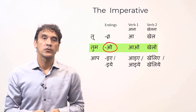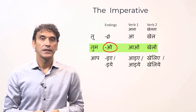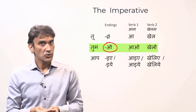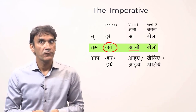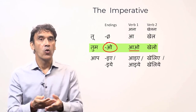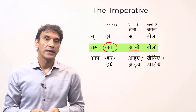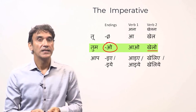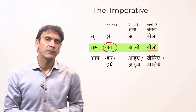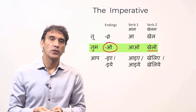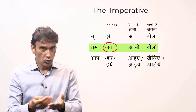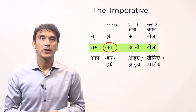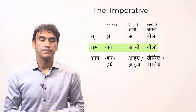To make the imperative for 'tum,' the ending '-o' is added to the root of the verb. Verb one has the root 'aa,' so the imperative form is 'aao.' Verb two has the root 'khel,' so the imperative form is 'khelo.' So: 'tum aao' — you come; 'tum khelo' — you play.